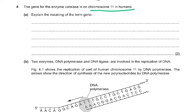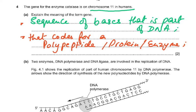Question 4 asks: explain the meaning of the term 'gene'. A gene is a sequence of nucleotides, or you can say a sequence of bases, that is part of the DNA and codes for a polypeptide, or you can say a protein or an enzyme.